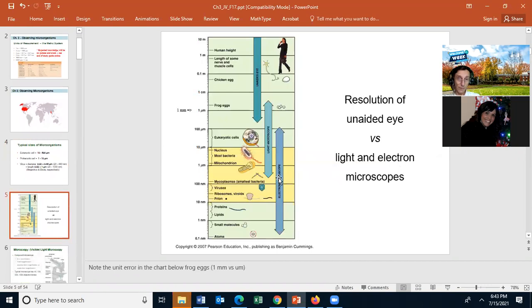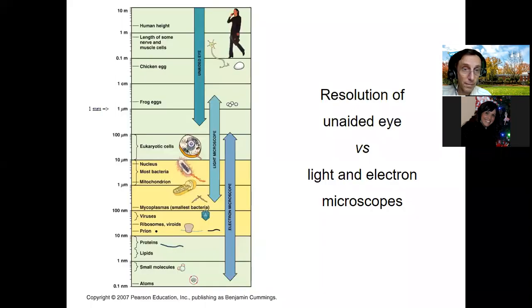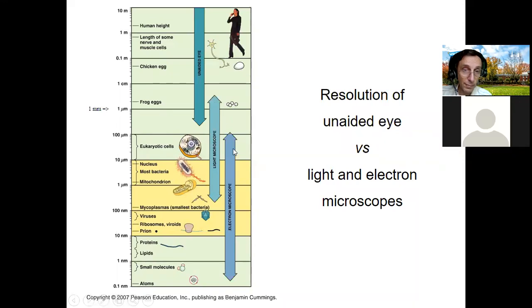This slide shows the sizes of things. You only need to know the relative sizes, not the exact size. Be careful — there's an error in the chart: that shouldn't be one micrometer, it should be one millimeter. We can see things as small as frog eggs, but we cannot generally see most eukaryotic cells. For smaller things we need the light microscope, and for even smaller things we need the electron microscope.